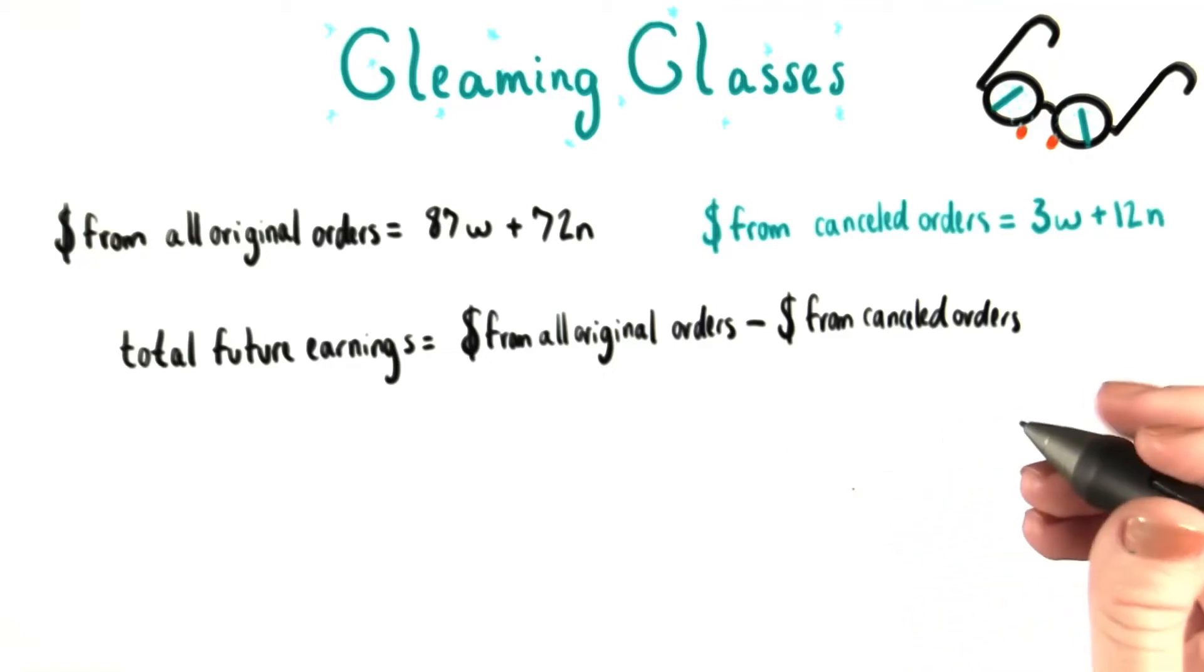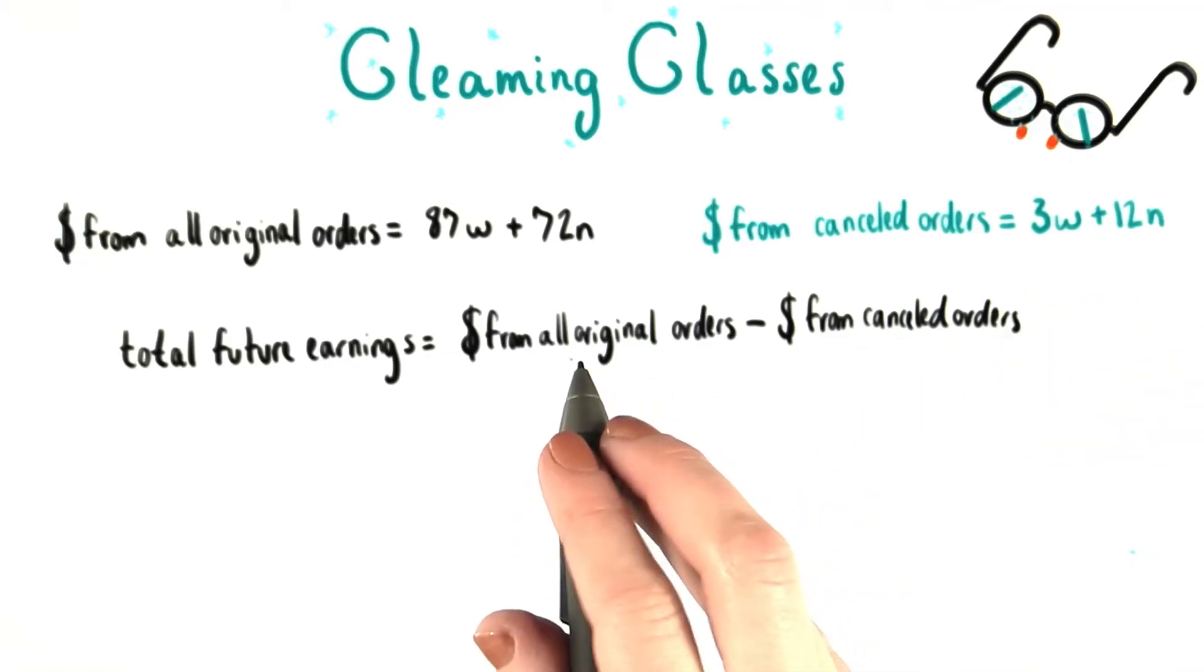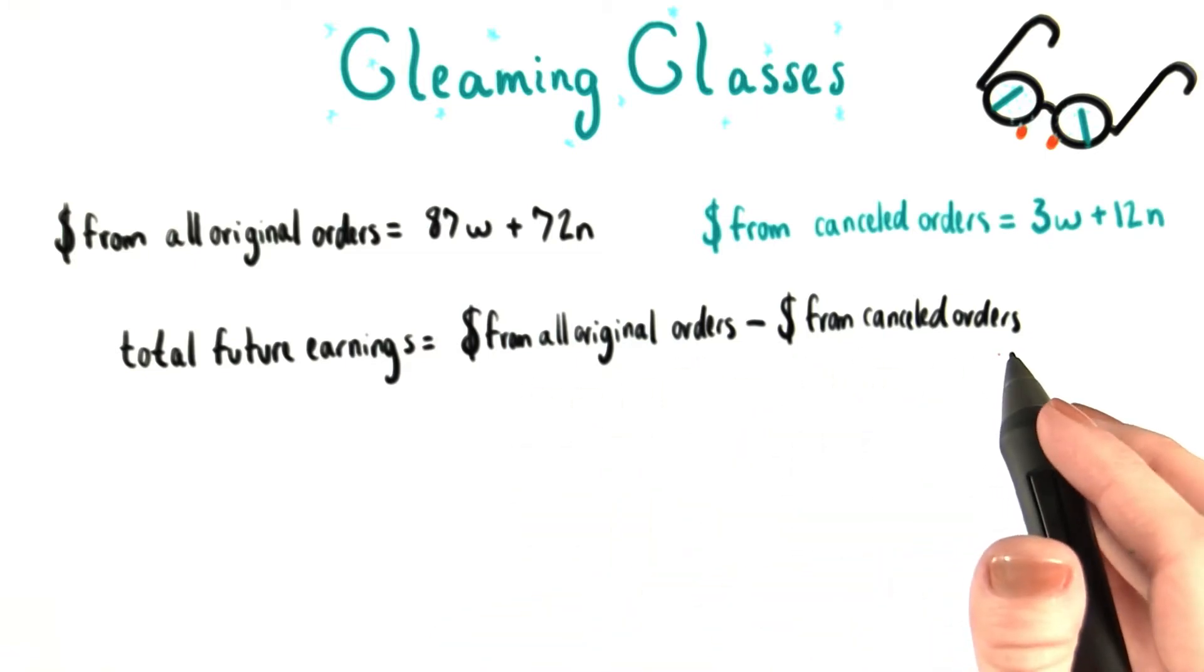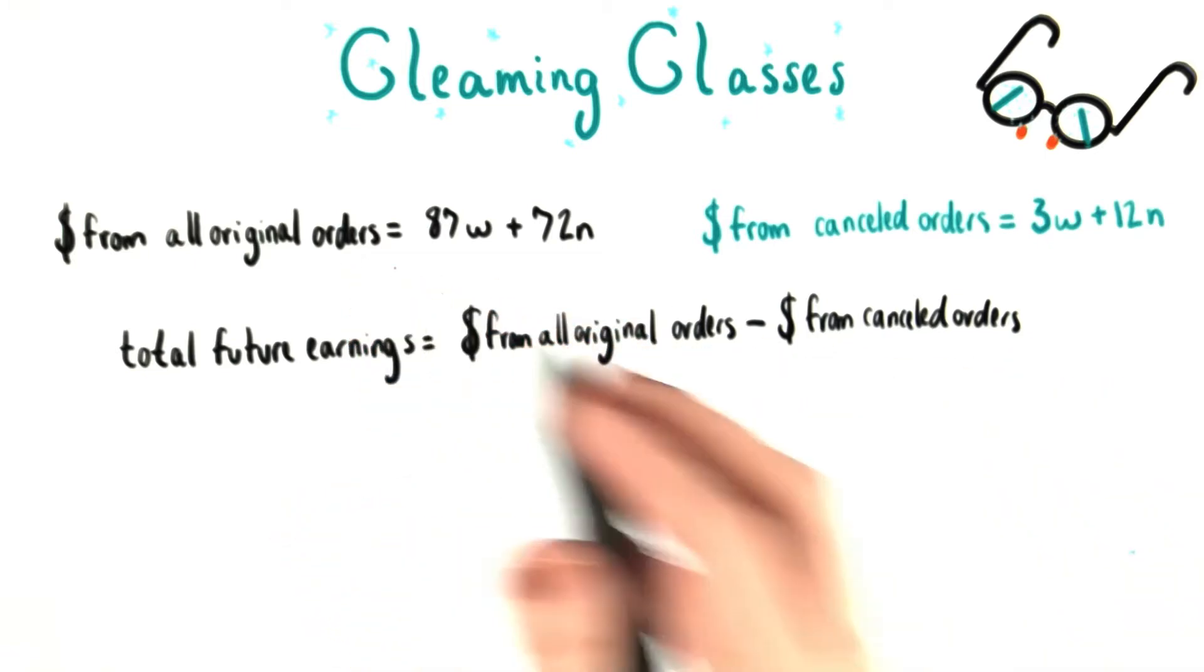This is just another case where we need to substitute in new values for these two quantities, money from all original orders and money from cancelled orders into this expression using these other two equations.